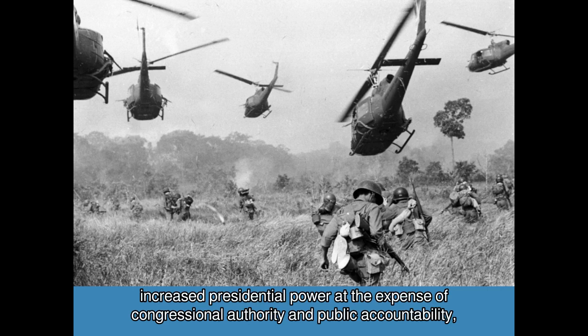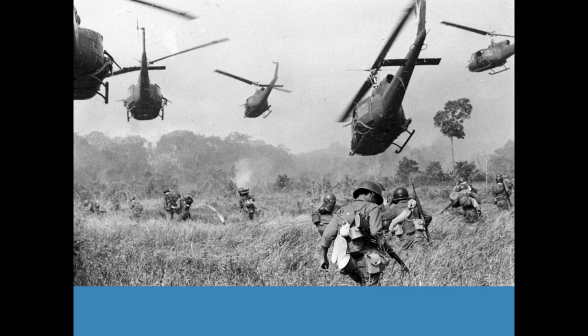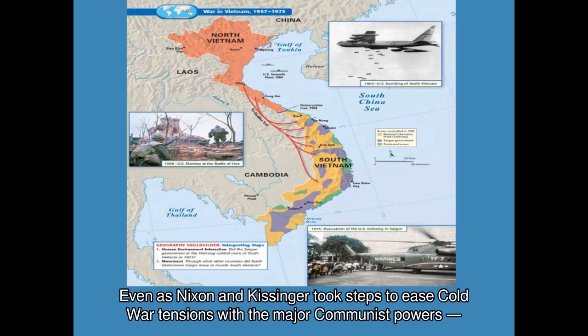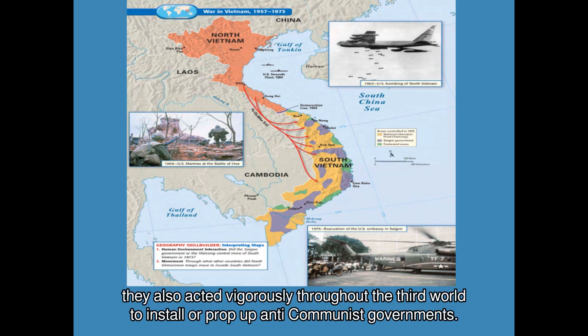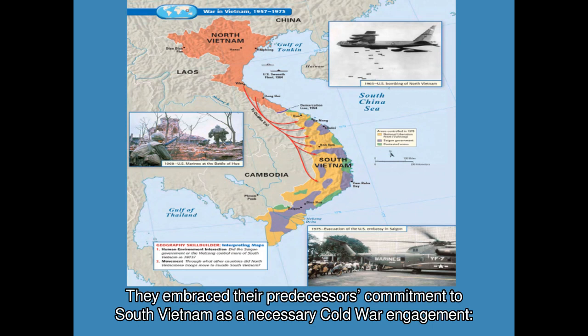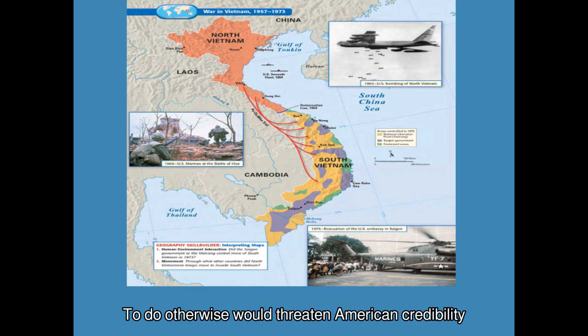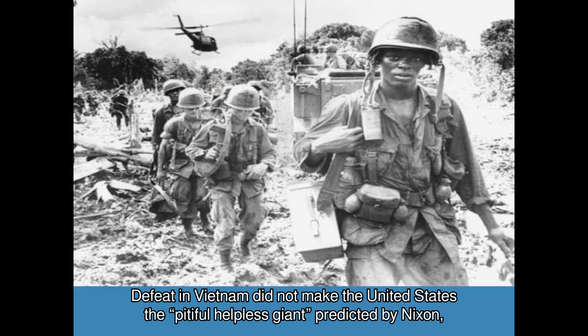Even as Nixon and Kissinger took steps to ease Cold War tensions with the major communist powers — the Soviet Union and China, which were also the main suppliers of the North Vietnamese — they also acted vigorously throughout the Third World to install or prop up anti-communist governments. They embraced their predecessors' commitment to South Vietnam as a necessary Cold War engagement; to do otherwise would threaten American credibility and make the United States appear weak. Defeat in Vietnam did not make the United States the pitiful helpless giant predicted by Nixon, but it did mark a relative decline of U.S. power and the impossibility of containment on a global scale.